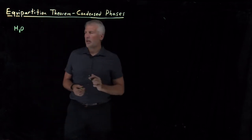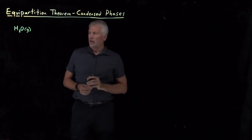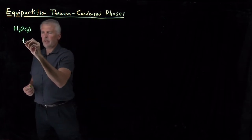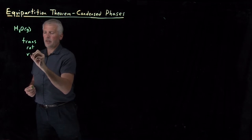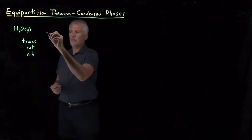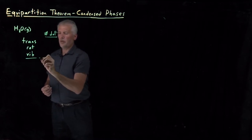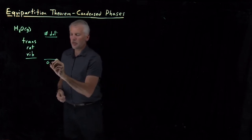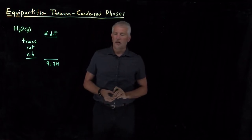We'll use water as our example — gaseous water to begin with. The equipartition theorem tells us to count the number of quadratic degrees of freedom, which we can break up into translational, rotational, and vibrational. For a triatomic molecule, n equals three atoms, so the total number of degrees of freedom is 3n = 9.